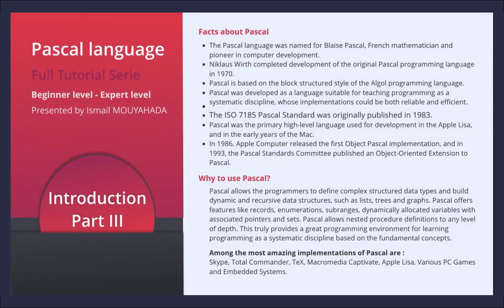Facts about Pascal. The Pascal language was named for Blaise Pascal, French mathematician and pioneer in computer development. Niklaus Wirth completed development of the original Pascal programming language in 1970. Pascal is based on the block-structured style of the Algol programming language, and was developed as a language suitable for teaching programming as a systematic discipline, whose implementations could be both reliable and efficient. The ISO 7185 Pascal standard was originally published in 1983. Pascal was the primary high-level language used for development in the Apple Lisa and in the early years of the Mac. In 1986, Apple Computer released the first Object Pascal implementation, and in 1993 the Pascal Standards Committee published an object-oriented extension to Pascal.